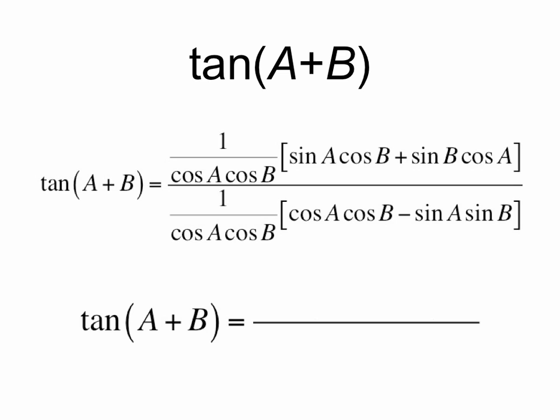And now we have tan a plus b equals, well our first term in the numerator is sine a cosine b over cosine a cosine b. The cosine b terms cancel, leaving us with sine a over cosine a, or tan a.